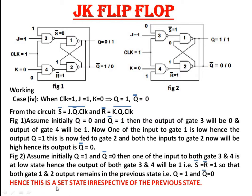Thus, when clock = 1, J = 1, K = 0, this state is called the set state, irrespective of the previous state.